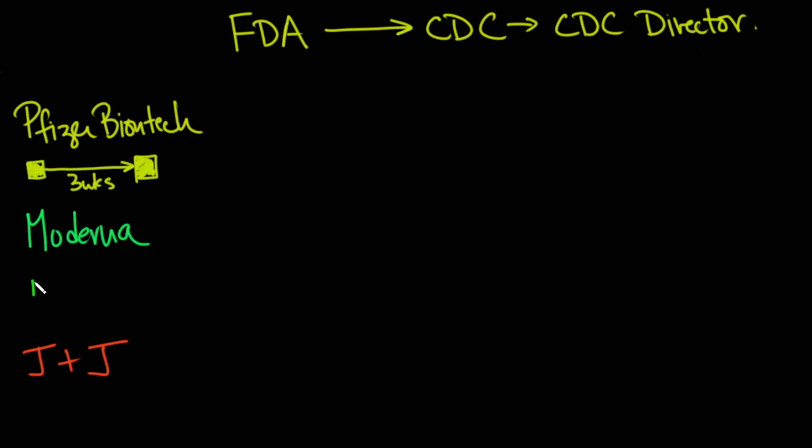The Moderna is given as a first dose, and then it's about four weeks, and then the second dose is given. And then finally, the Johnson & Johnson vaccine is given once.